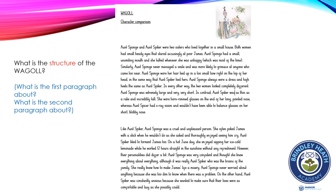So that's your character comparison about Aunt Sponge and Aunt Spiker. They're from James and the Giant Peach, aren't they? So first of all, we're going to look at the structure of our waggle — that's how it's organised on the page. What is the first paragraph about and what's the second paragraph about? See if you can see any difference. We have looked at character before and this is organised in the same sort of way. Pause the video, have a think, make some notes, talk to someone if there's someone with you. Think about the structure of this waggle.